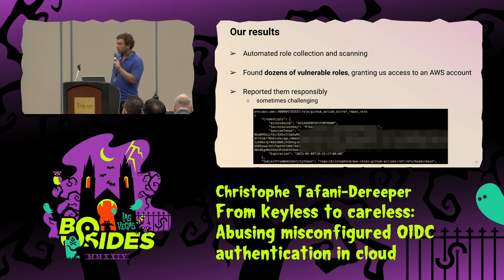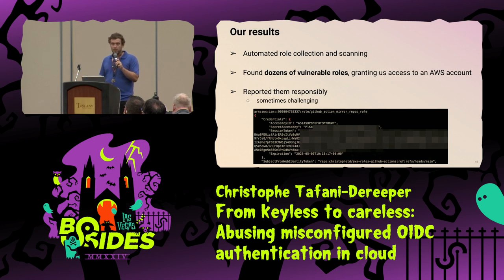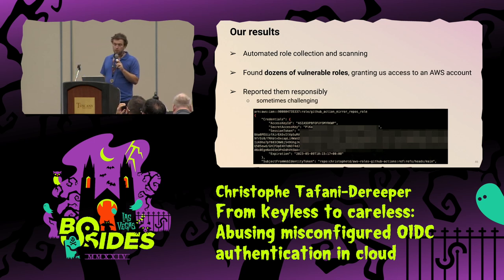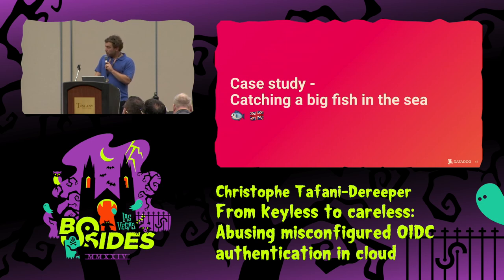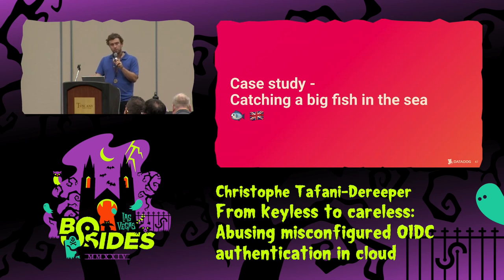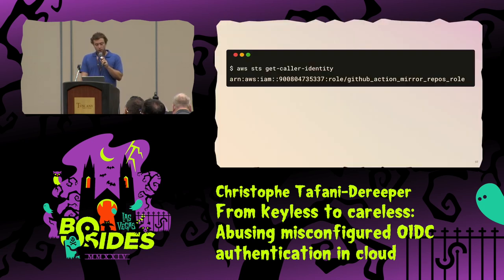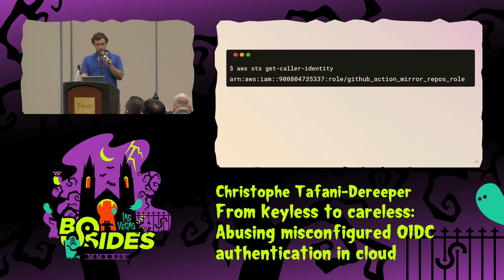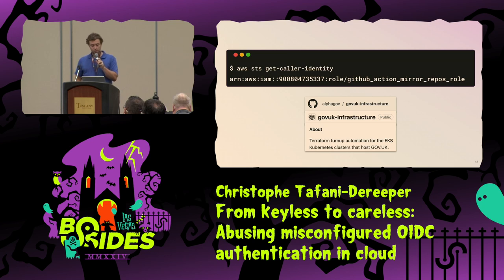We did report that responsibly. Sometimes it's quite hard because you're looking at a GitHub org with no named individual and no email. Now I want to stop on a pretty interesting case we found, interesting both in terms of impact and root cause. We compromised the credentials for one role called 'GitHub Action Mirror Repos Role.' If you Google this role, you see it belongs to a gov.uk repo described as the Terraform automation for Kubernetes clusters that host gov.uk.